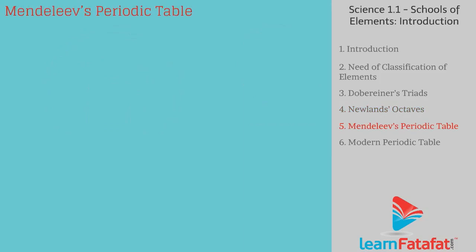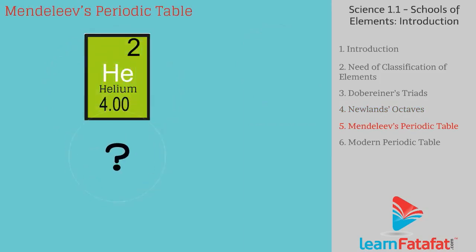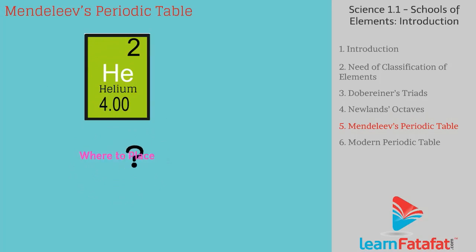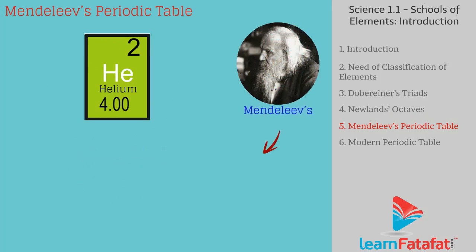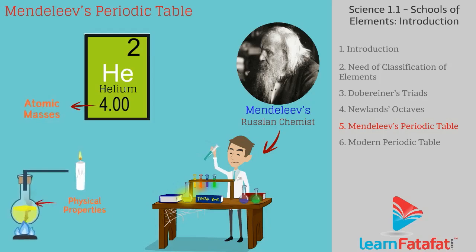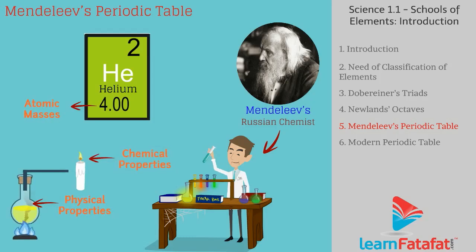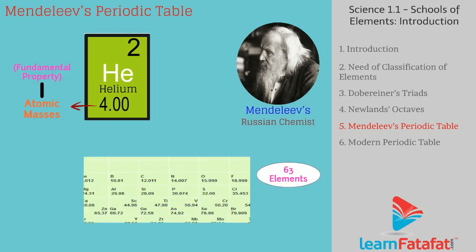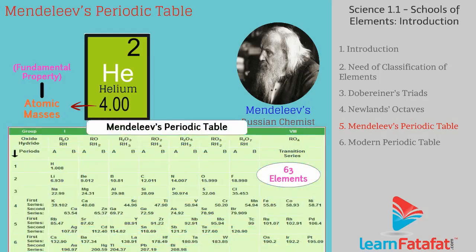With the discovery of inert gases, their classification became necessary. So Mendeleev, a Russian chemist, examined the relationship between the atomic masses of elements and their physical and chemical properties. He found atomic mass to be the most fundamental property of an element, and classified 63 known elements in a tabular arrangement known as Mendeleev's Periodic Table.